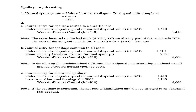To get the normal spoilage rate, divide the units of normal spoilage — which are 6 units — by the total good units completed, which are 40 units. So the normal spoilage rate is equal to 15%.